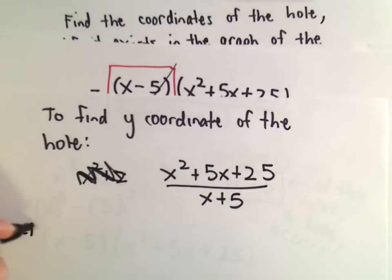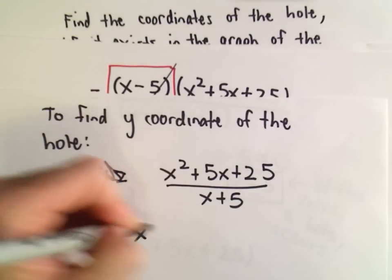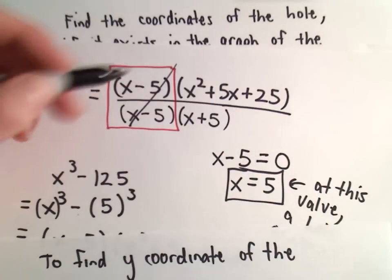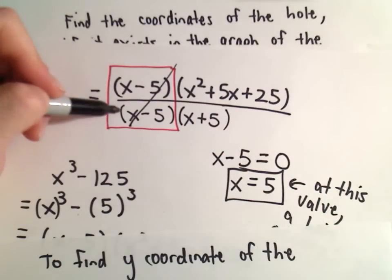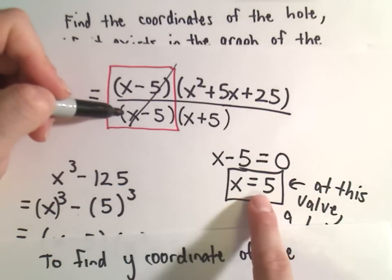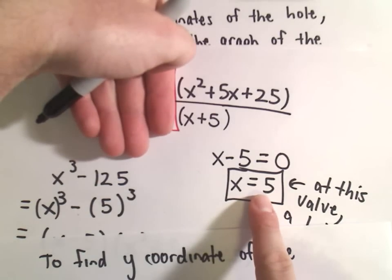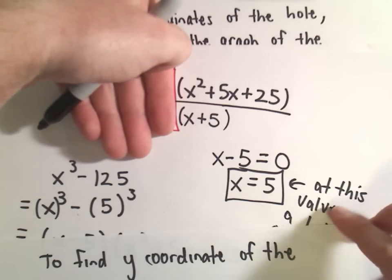All we have to do is substitute in the x coordinate where the hole occurs. So, again, right, we factored and we said, oh okay, there's this common factor, x minus 5 over x minus 5. Therefore, at 5, there's going to be a hole. Well, what you do is get rid of the common factors and then just plug 5 into whatever's remaining. That's all we're doing.